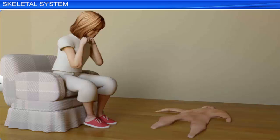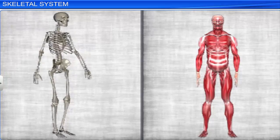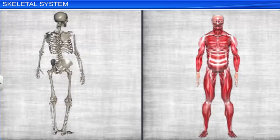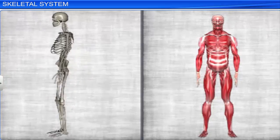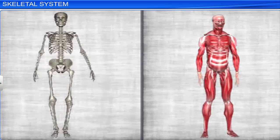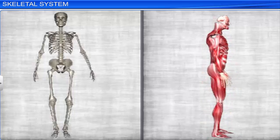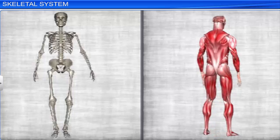Have you ever wondered how a boneless body would look? It would be a shapeless bag, making it difficult to move from one place to another. Our skeletal system gives shape to our body, and the muscular system helps in movement.